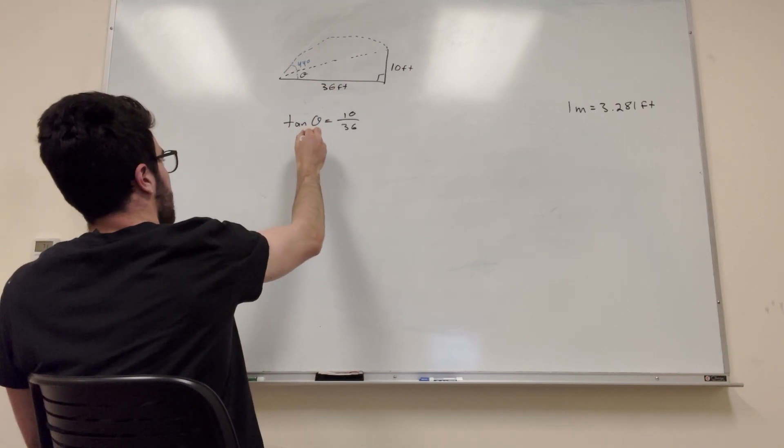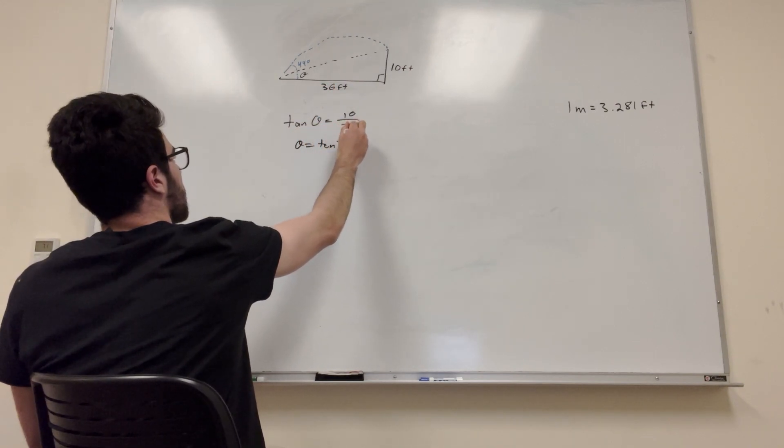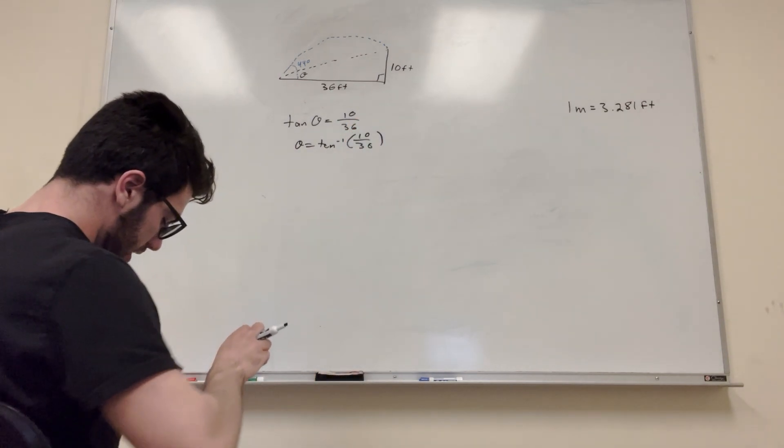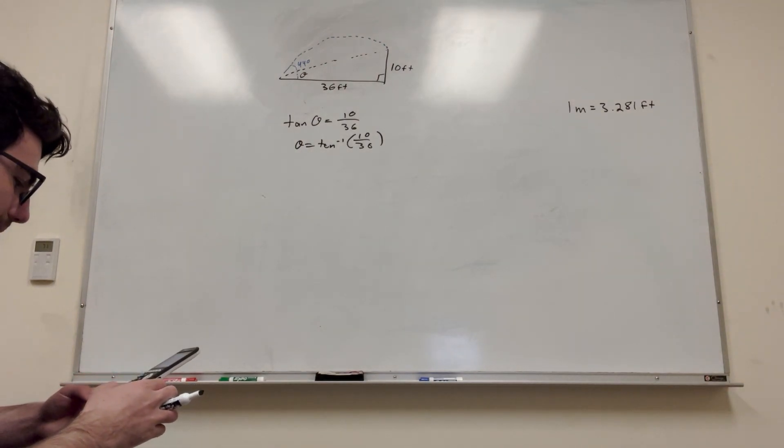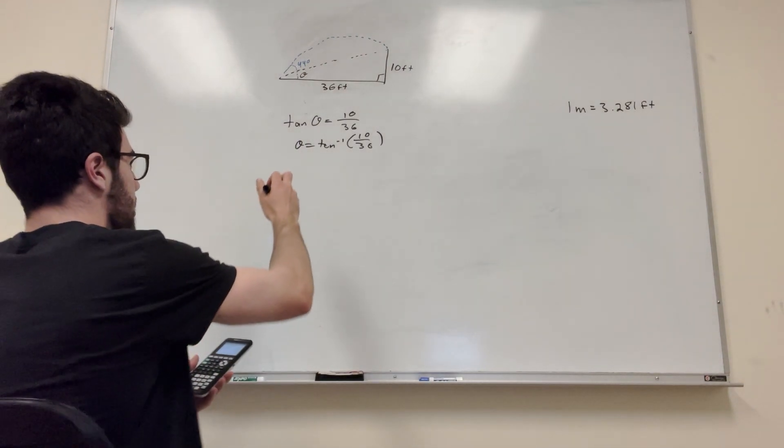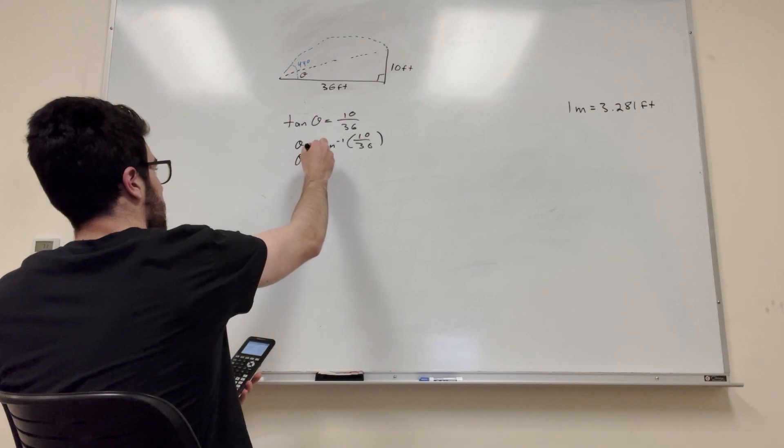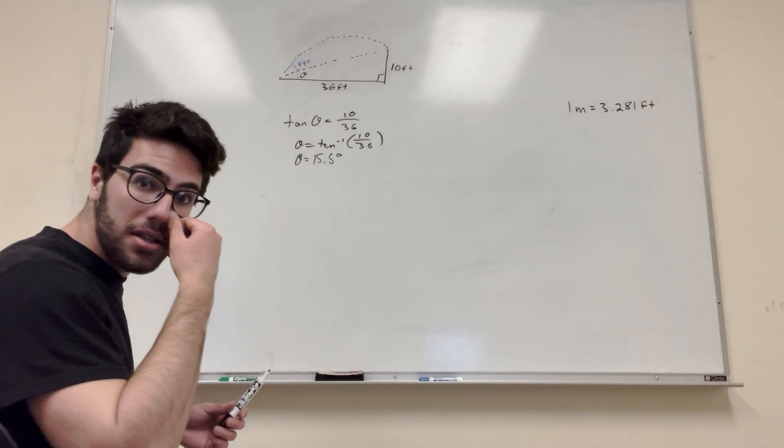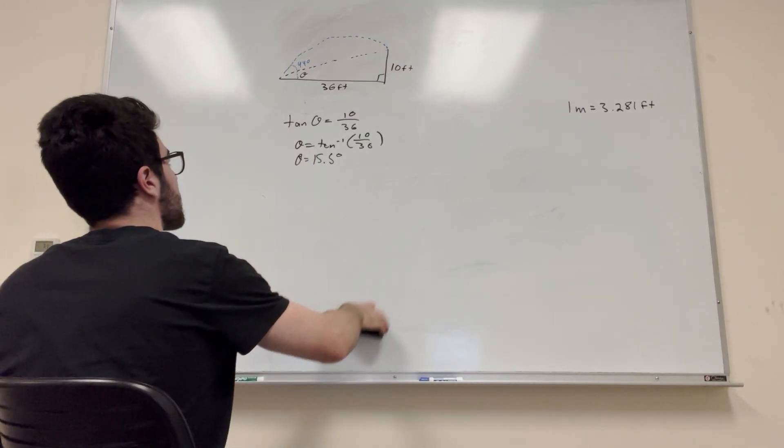So we know that tangent theta is equal to 10 over 36, right? Opposite over adjacent. Then we can take the inverse tangent of 10 over 36, just hit the inverse on your calculator. Let's see what this is. I know what it is because I just did it. 15.5 degrees. Okay, there's part one. Pretty simple, right? 15.5 degrees. That's the easy part.